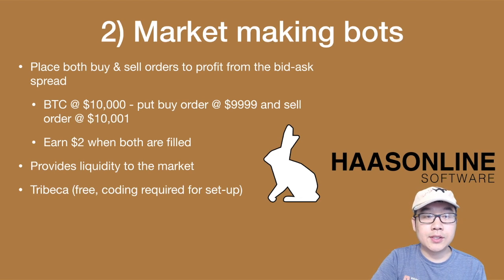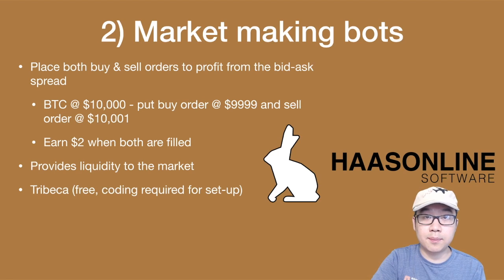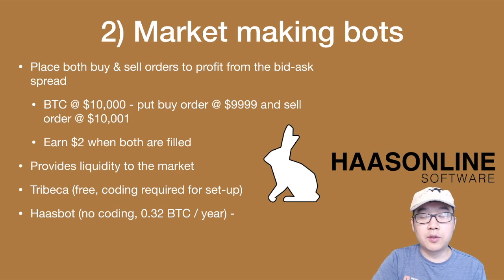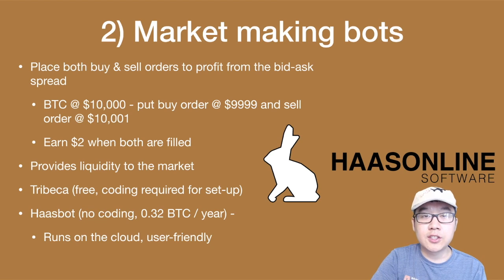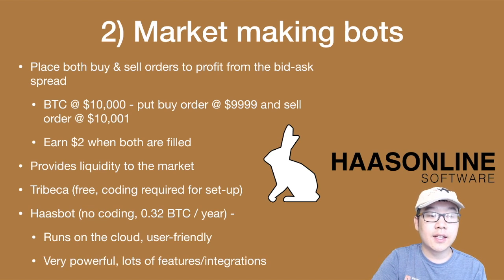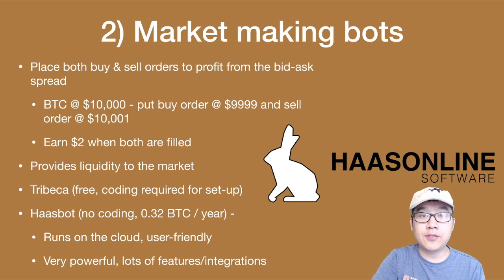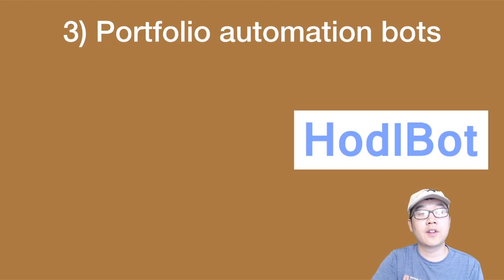One popular market making option is Tribeca — it's free, but coding is required for setup. Also, Haasbot is a very popular one: no coding required, costs 0.32 Bitcoin per year, sometimes runs on the cloud so you don't need to download it to your personal computer. It's very user-friendly — that's one of their main focuses — and also very powerful, with lots of features and integrations with exchanges.